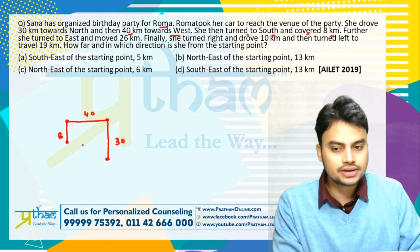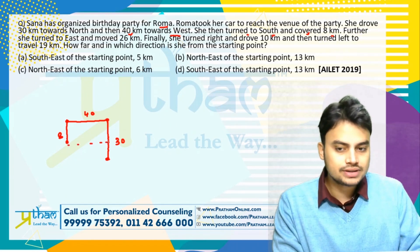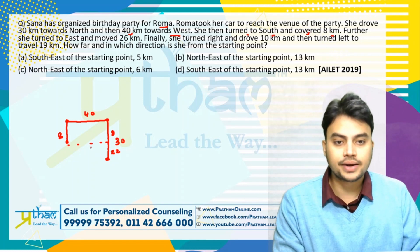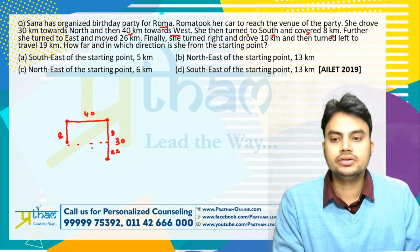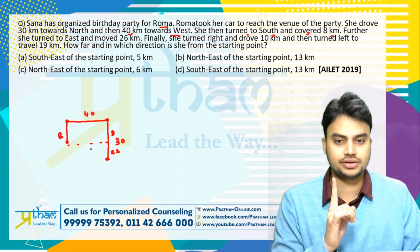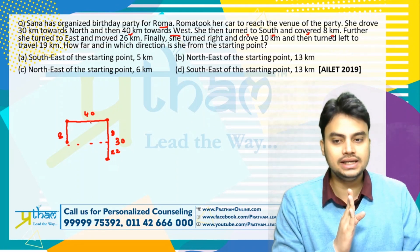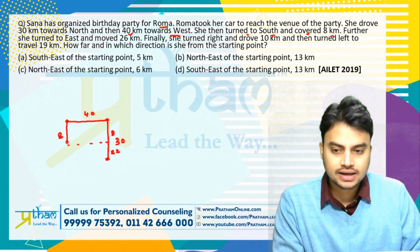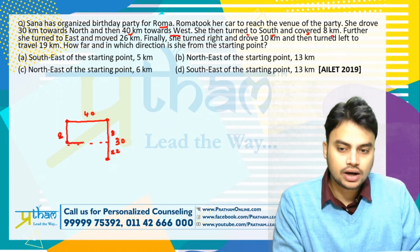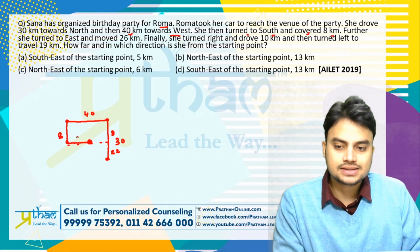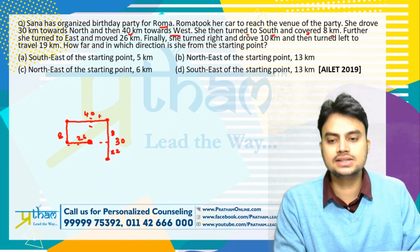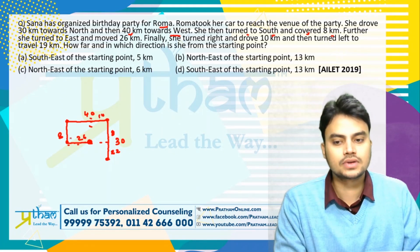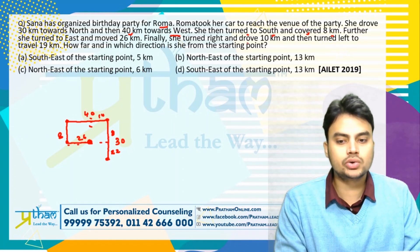8 km will be shorter than the 30 km north side. If this is 8, then this remaining part will be 22. Further, she turned to east and moved 26 km. This is 40, so 26 km has to be shorter than the 40 km side. Let's say this is 26 km, so how much is remaining on this side — this will be 14. Finally she turned right and drove 10 km.